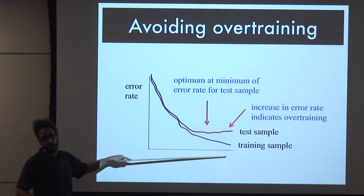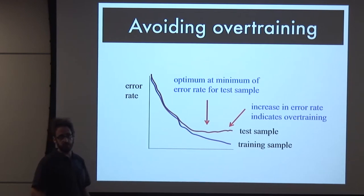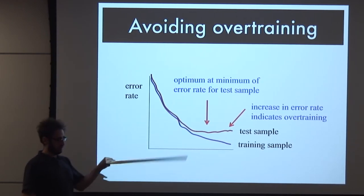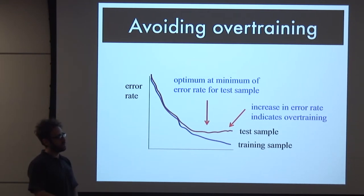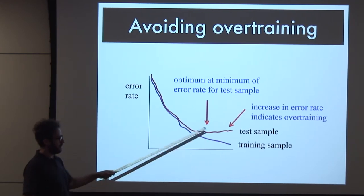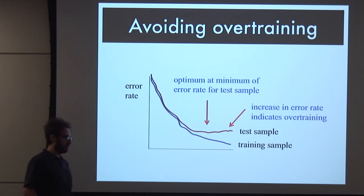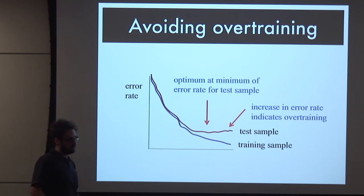You have to keep the training and test samples independent. You never use information from the test sample in the training. You could modify the training sample, but you have to keep the test sample independent.